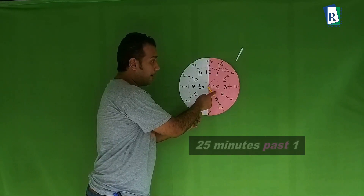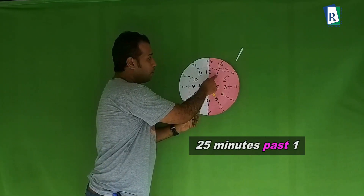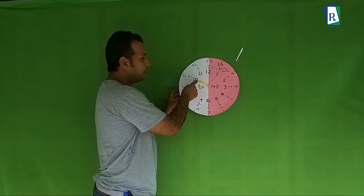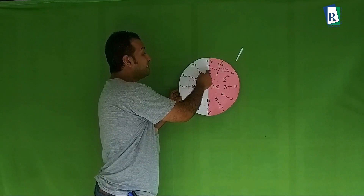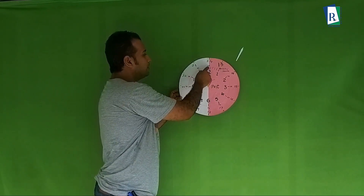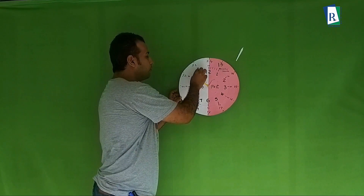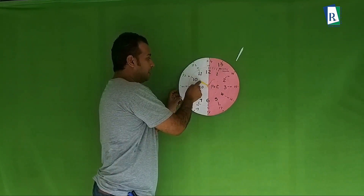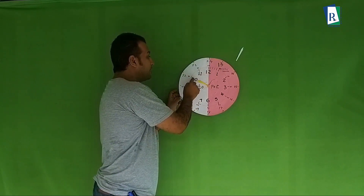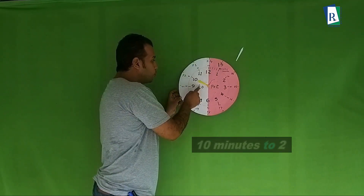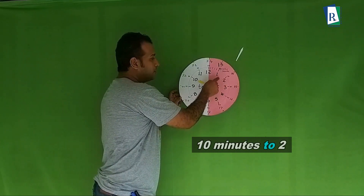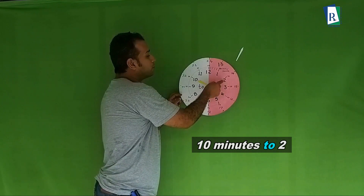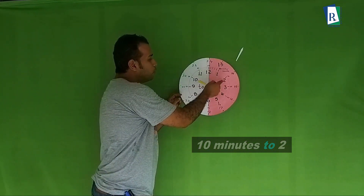Another example: the minute hand is at 25, so we read 25 minutes past — what number? 1. So: 25 minutes past 1. Now how many more minutes to reach 12 from here? Five, then another five — that is 10 minutes to reach 12. So 10 minutes to the next hour. When the minute hand reaches 12, the hour hand will be at 2 — so 10 minutes to 2.